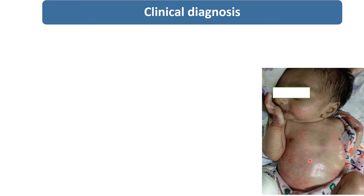This is the image of the newborn at the time of discharge. At that time, the newborn is having over the cheek and over the trunk erythematous patch-like lesions present over chest, abdomen, and over the cheek. Over both the hands, the newborn is having erosive lesions and crusted lesions. Even new bulla formation at the wrist is present.